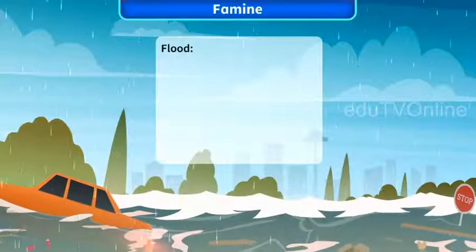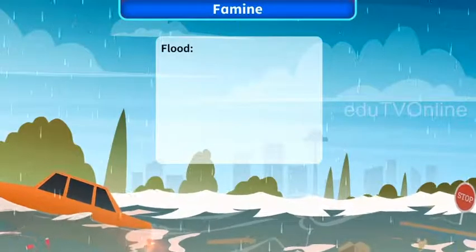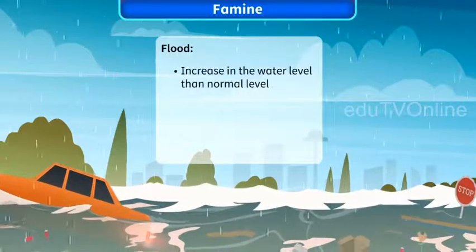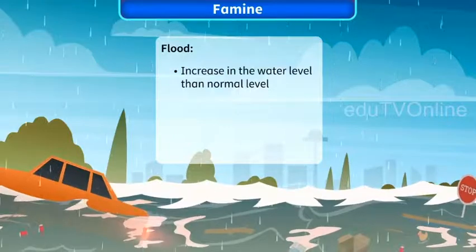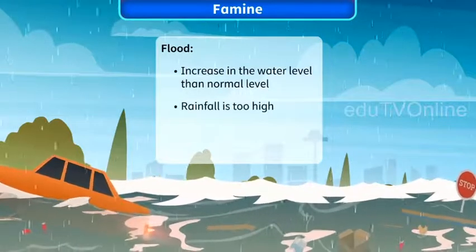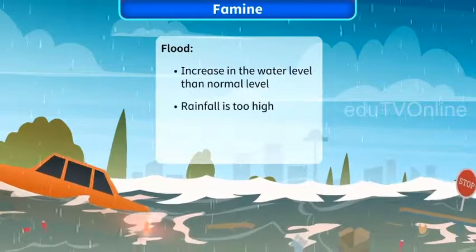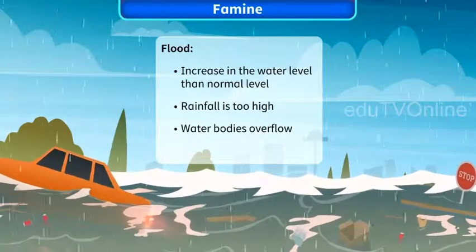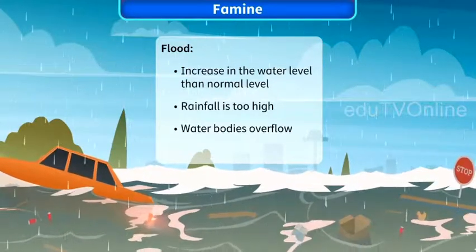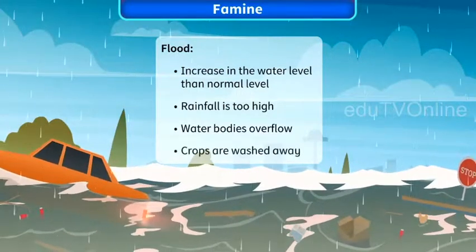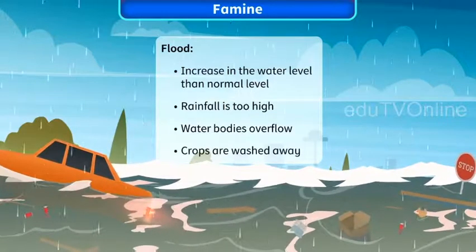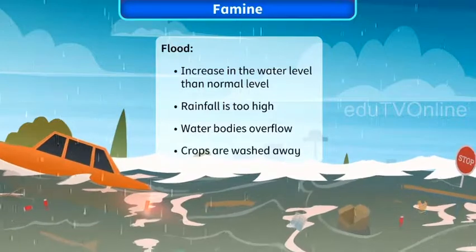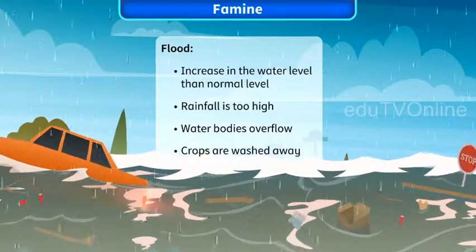Flood is also a natural disaster. It is an increase in the water level above the normal level. It occurs when the rainfall in a region is too high, such that water bodies like rivers and lakes start overflowing. Crops cannot grow in floods since they are washed away by gushing waters. The loss of crop yield leads to famine.